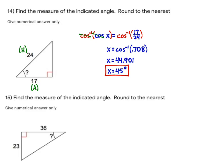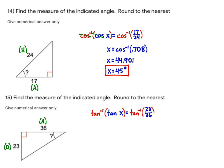For the last problem, the 36 is adjacent to the indicated angle — it's between the indicated angle and the 90-degree angle — and the 23 is opposite. We use tangent, so tangent of x equals 23 over 36. Taking the arc tangent of both sides, those cancel out, and x equals arc tangent of 23 over 36, which is 0.639. Taking the arc tangent gives 32.574, which rounds to 33 degrees.